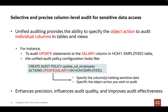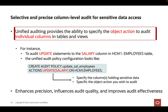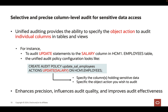Starting with Oracle Database 23AI, unified auditing provides the ability to specify the object action to audit individual columns in tables and views. For instance, to audit update statements to the salary column in the employees table, the sample unified audit policy looks as such. To monitor sensitive data access, you typically provide the columns holding such sensitive data along with the action you wish to audit on that sensitive column access.